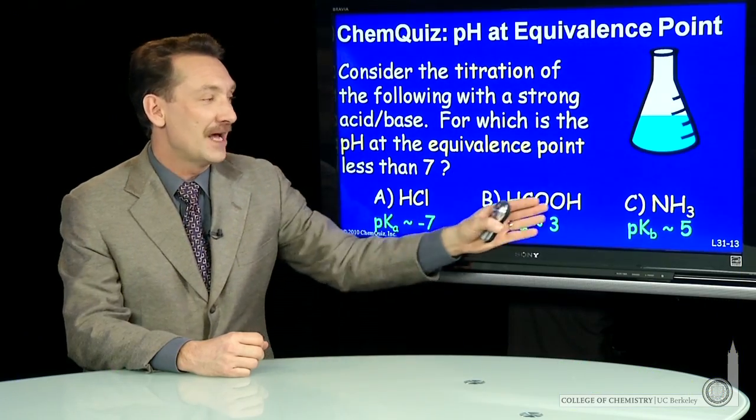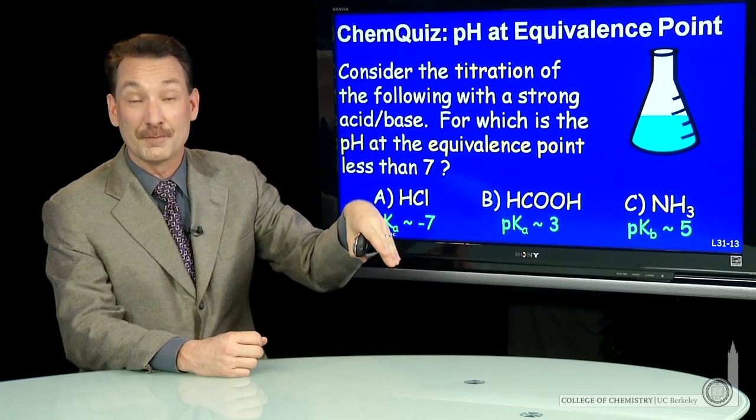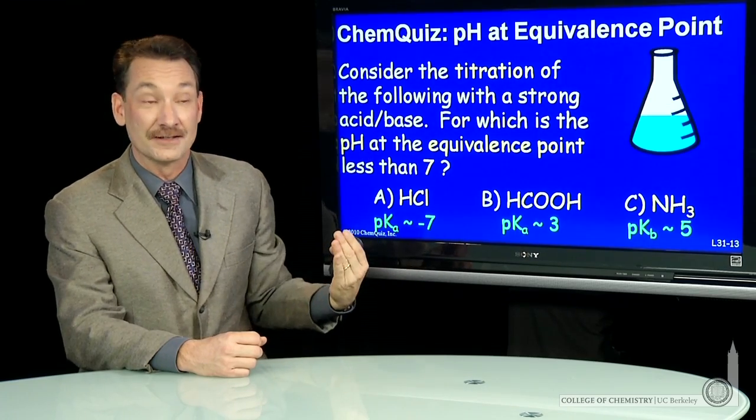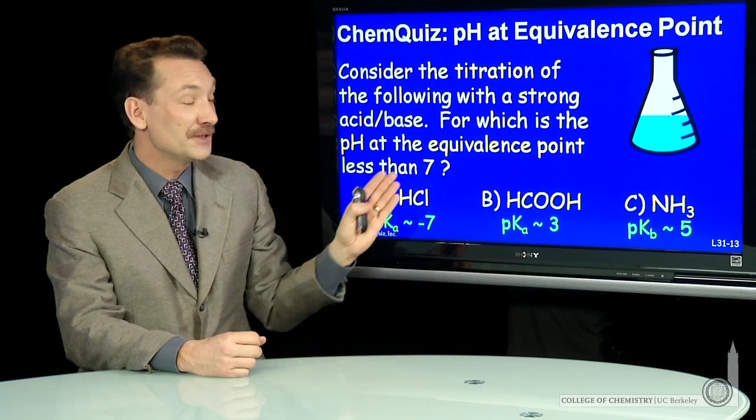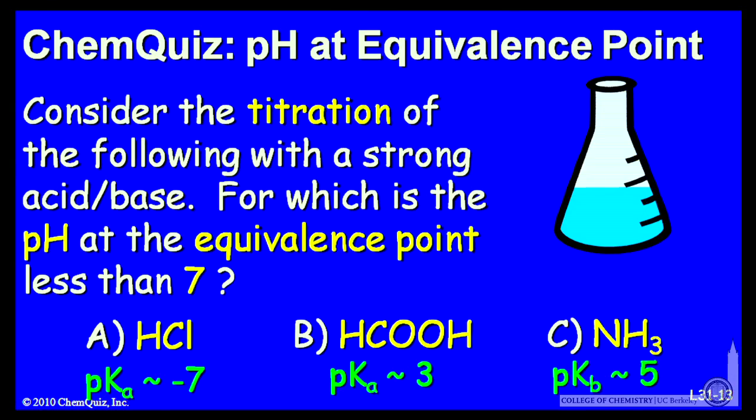So two acids and a base, we'll titrate them appropriately. If there are acids, we'll titrate them with a base. If it's a base, we'll titrate it with an acid. The question is, at equivalence point, which has the pH less than 7? A, B, or C? Think about that for a minute and make a selection.